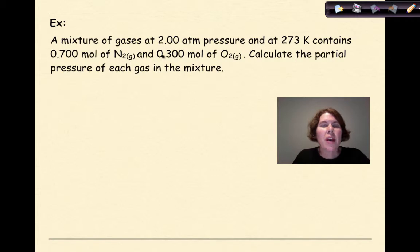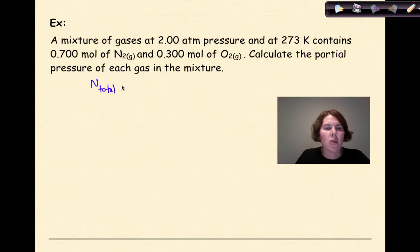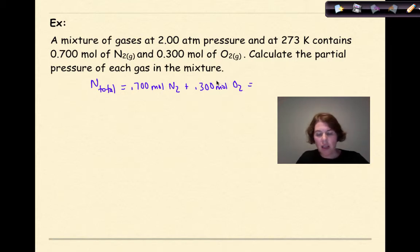Let's look at another example. A mixture of gases at 2 atmospheres and 273 Kelvin contains 0.7 moles of nitrogen and 0.3 moles of oxygen. Calculate the partial pressure of each gas. Start with total moles: 0.700 moles of N₂ plus 0.300 moles of O₂ equals 1 mole total.